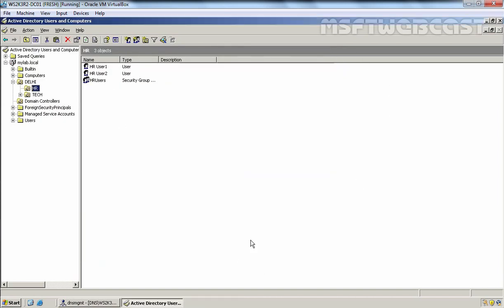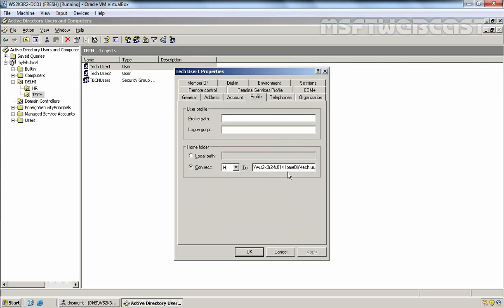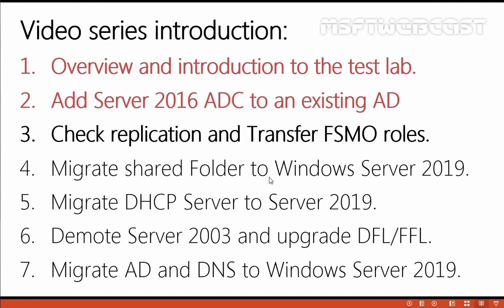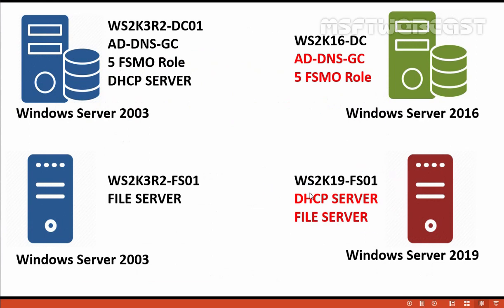We need to migrate these shared folders from Windows Server 2003 to Windows Server 2019. This is how we can transfer FSMO roles from a Windows Server 2003 domain controller to a Windows Server 2016 domain controller. Our Windows Server 2016 domain controller is already configured as a global catalog server, so we can now say that Windows Server 2016 is working as the root domain controller for mylab.local.